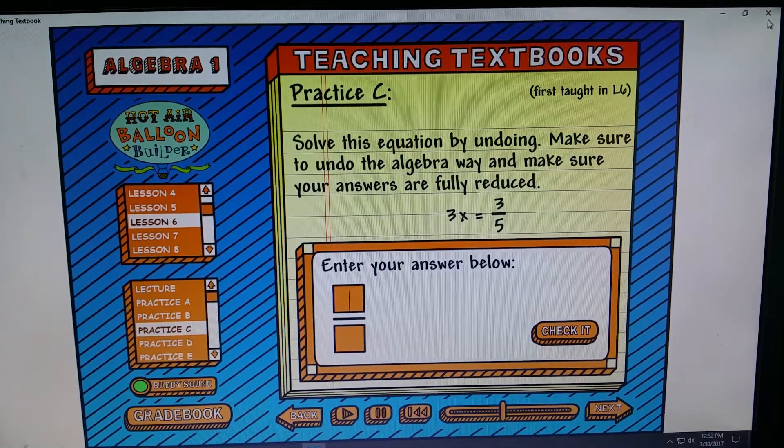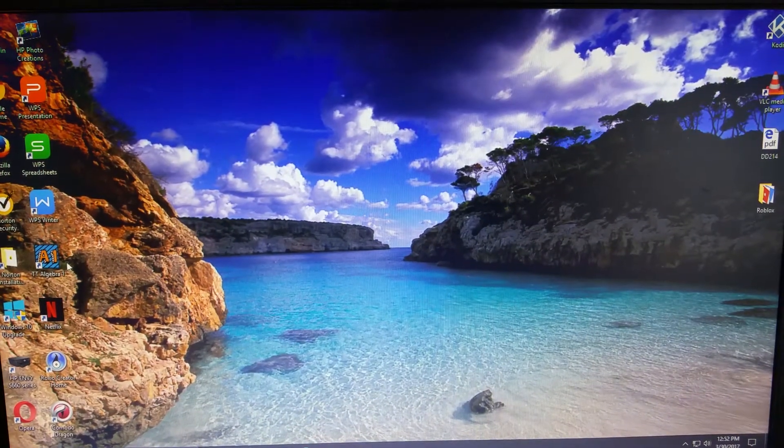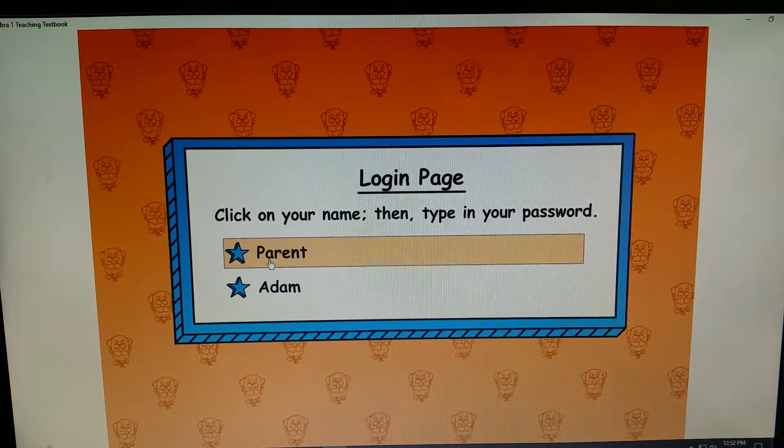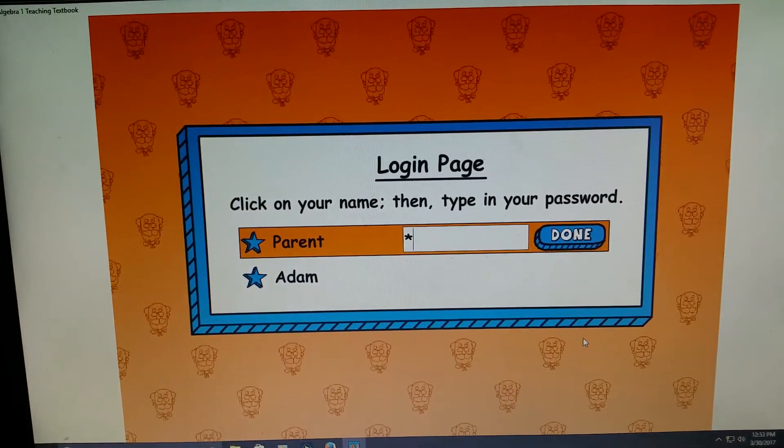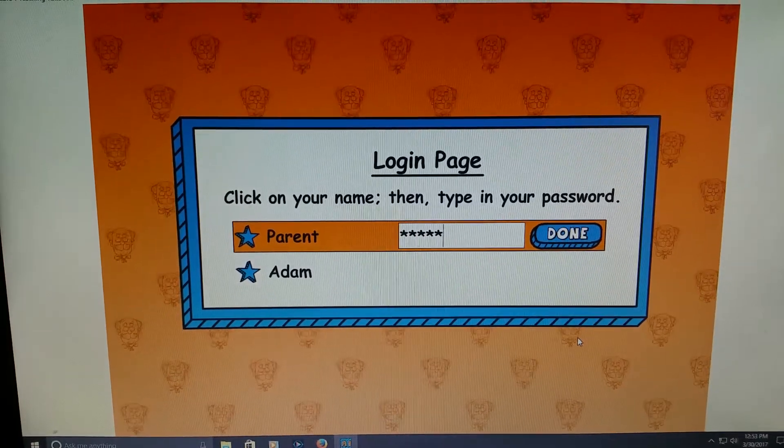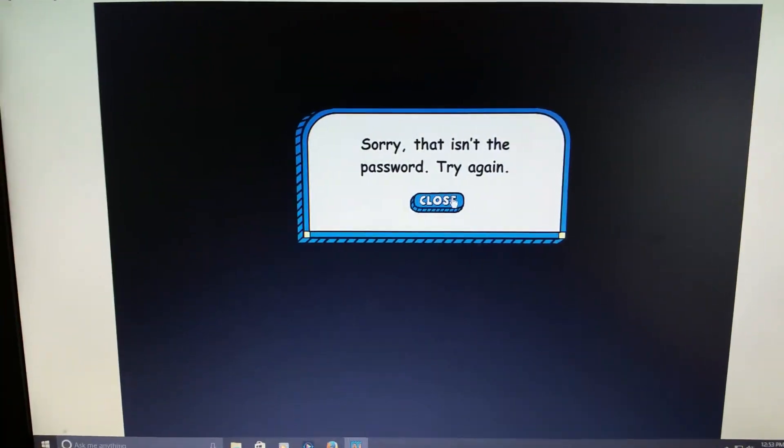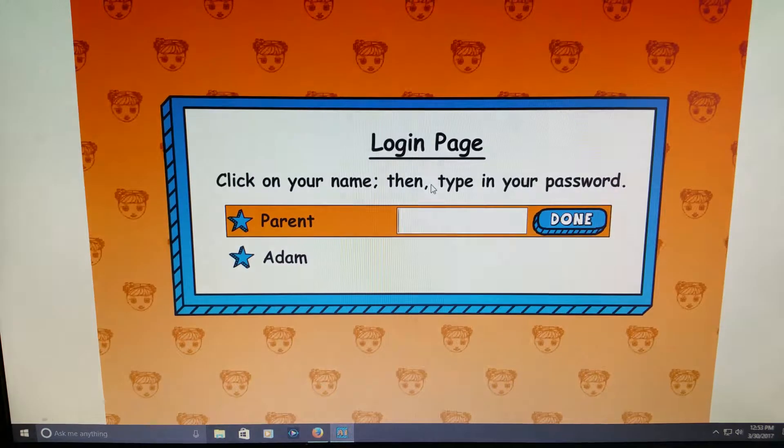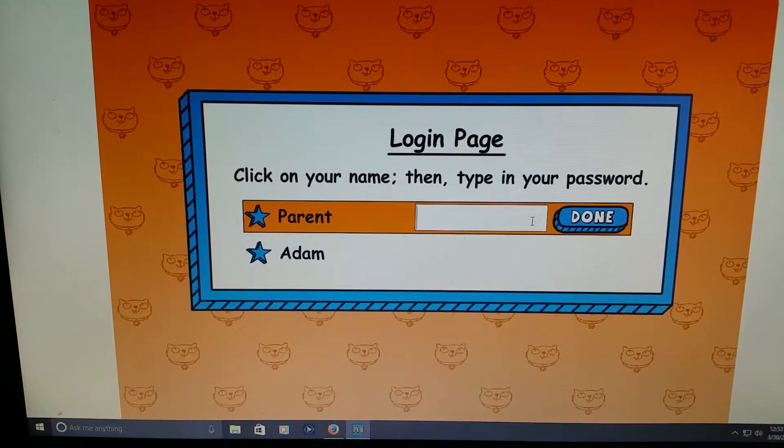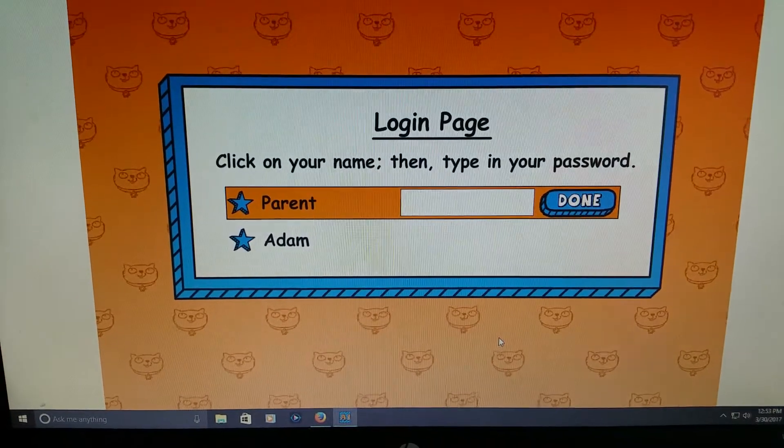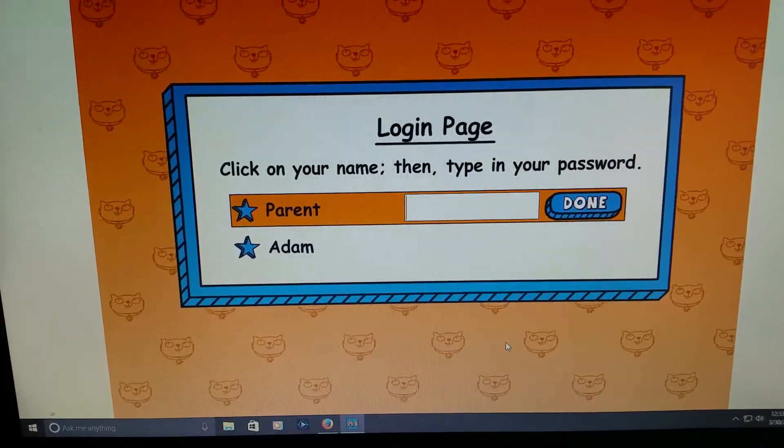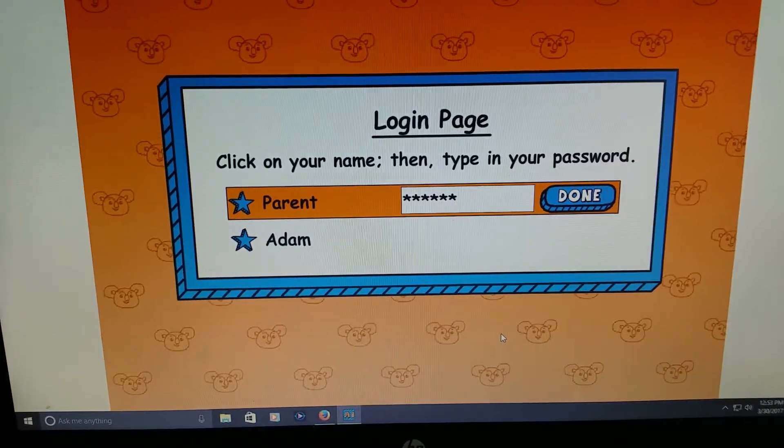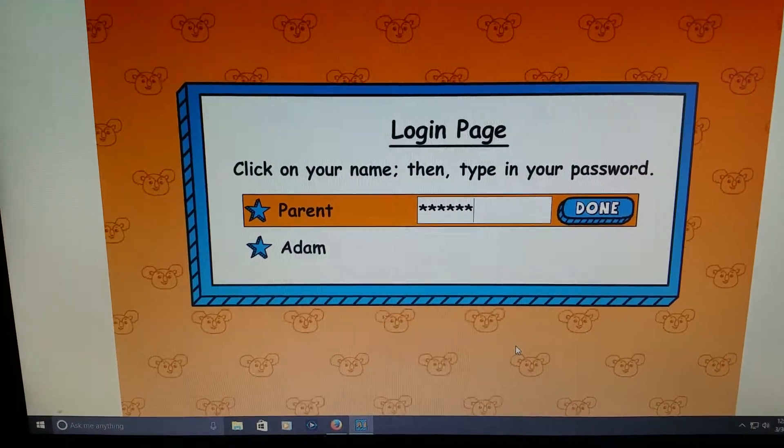So you need to solve this equation by undoing 3X. So if I go back into this, okay, so as a parent, you click into there and you get to view the same thing as I just showed you on the grade book.